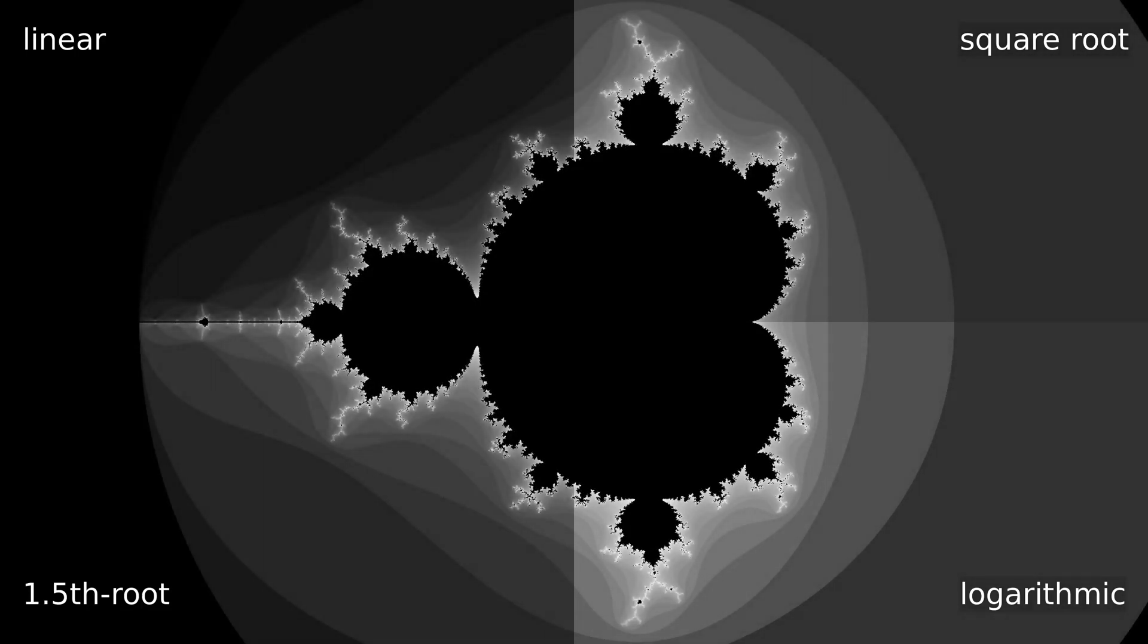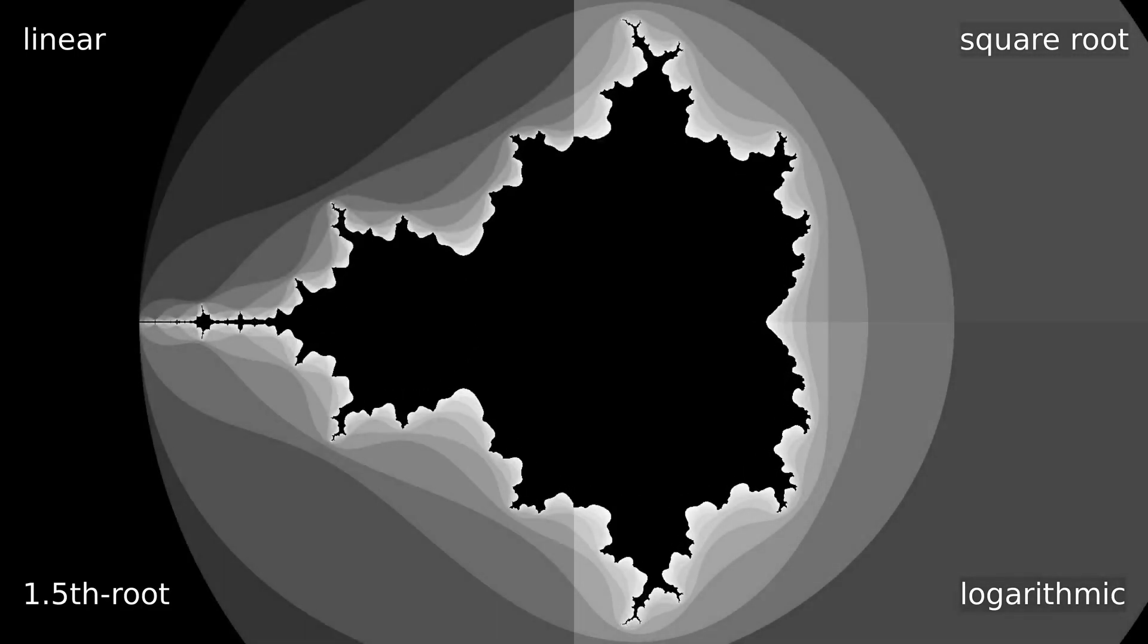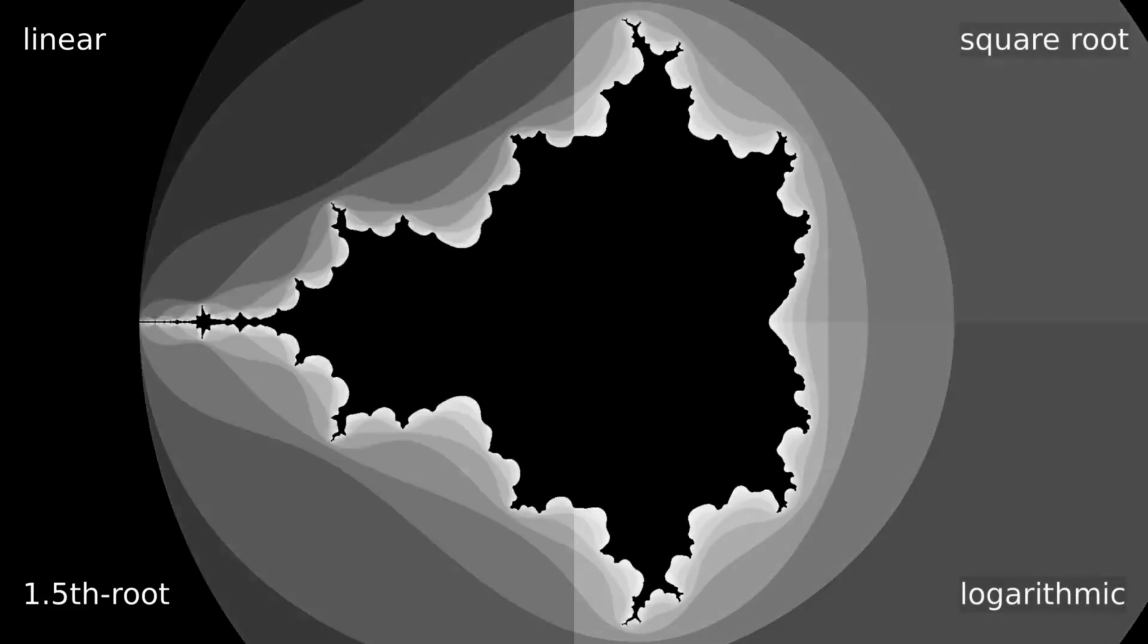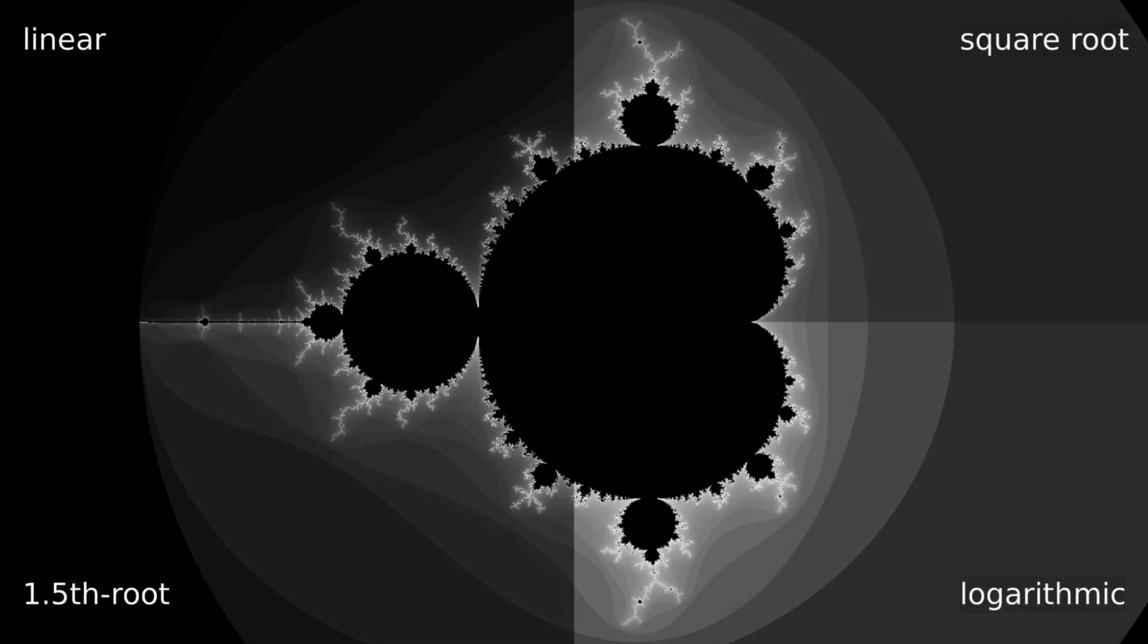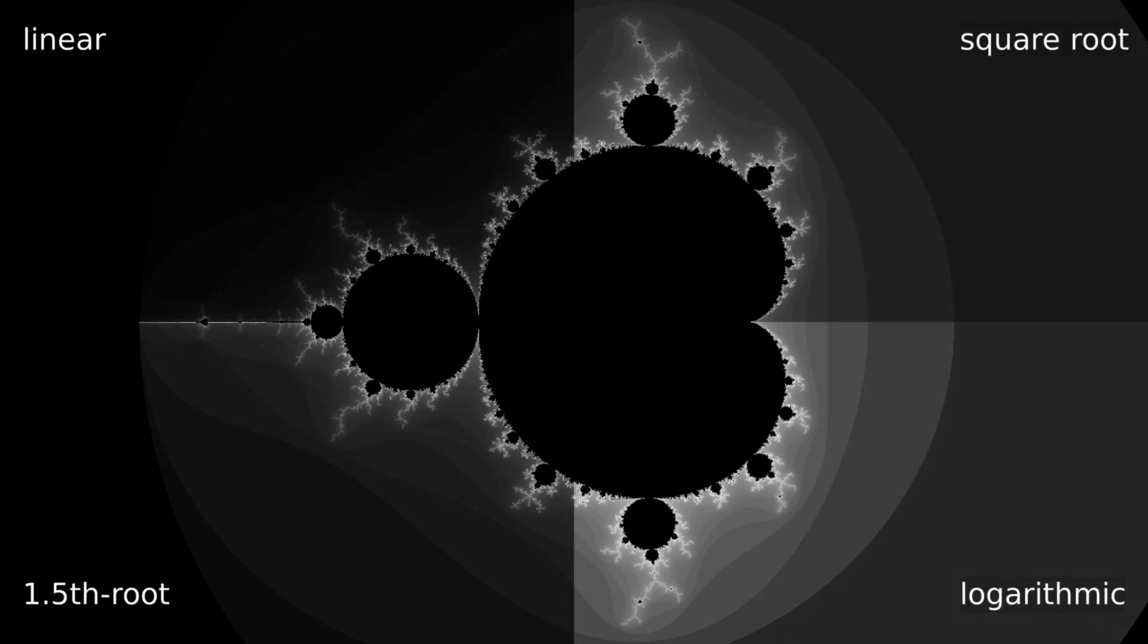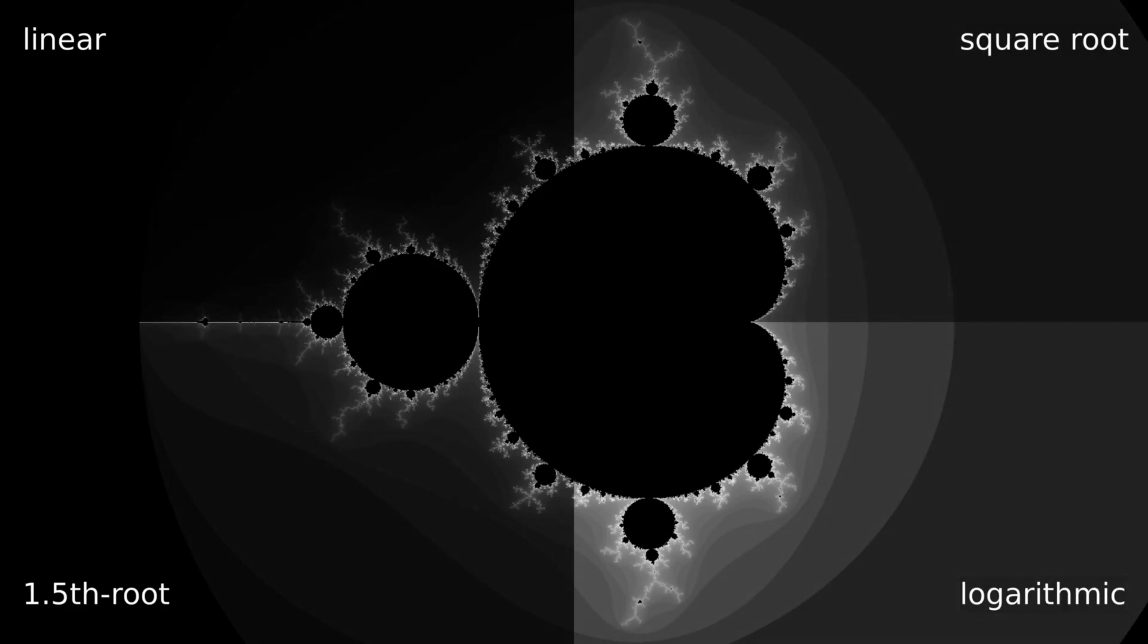However, that is not the only way to color the Mandelbrot set. We currently see an animation showing the effect of the number of iterations on the image with a black and white palette and four different ways of distributing said palette.